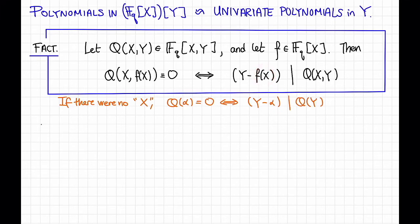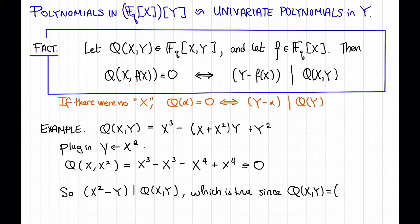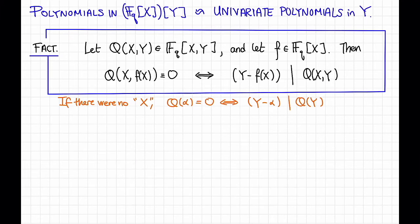To illustrate this, let's see an example. Let's say Q(X,Y) is the example from the previous slide: X³ - X + X²Y + Y². Now I claim that if we plug in X² for Y, we're going to get a polynomial that is identically 0. So Q(X, X²) equals X³ - X³ - X⁴ + X⁴. Everything cancels, and this is just 0. So our fact says that X² - Y should divide Q, which is true because we originally defined Q as (X² - Y)(X - Y). Let's erase this example so I have room to write a corollary.